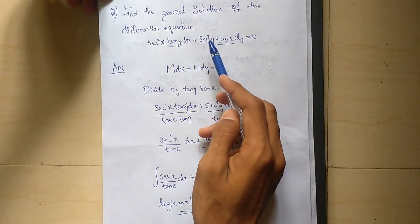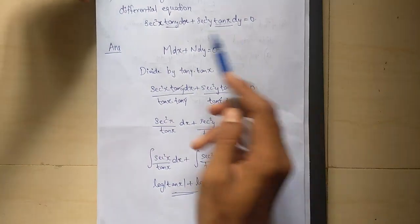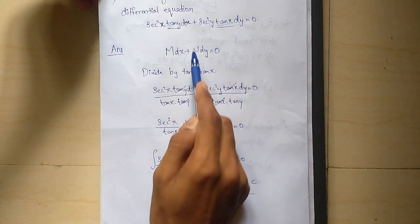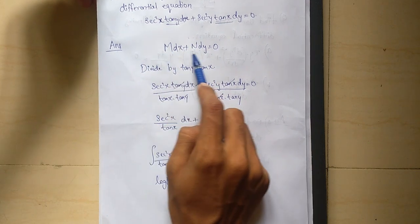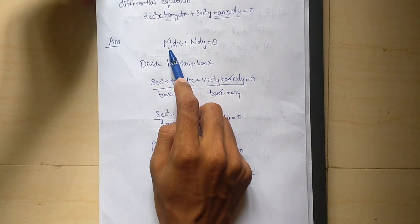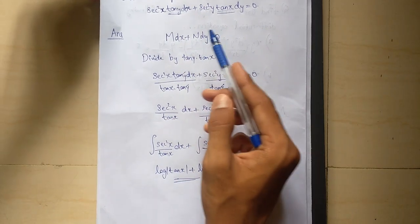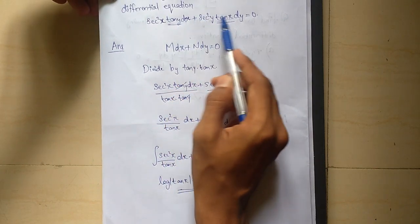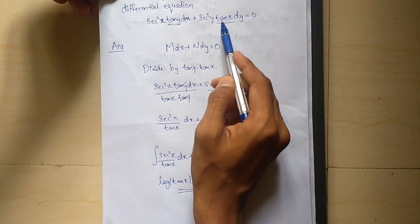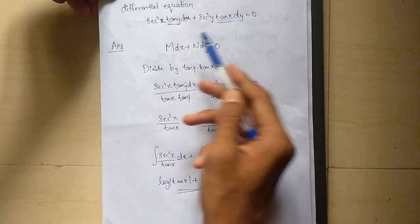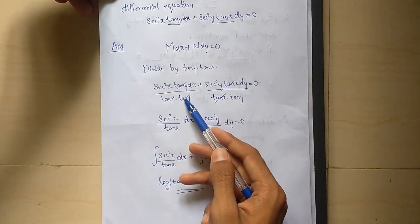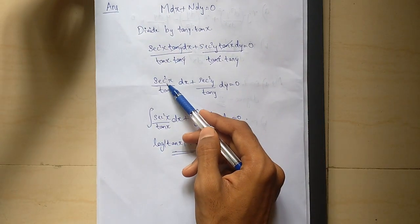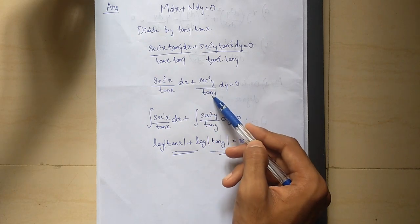So, if we have the same equation, now with dx and dy in the same form — this form is m dx plus n dy equals 0 — if m is a function of x and n is a function of y, then we divide these two parts and integrate directly.